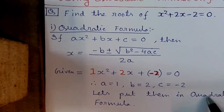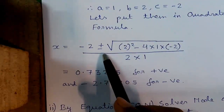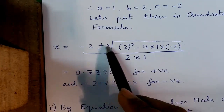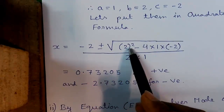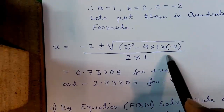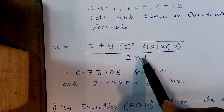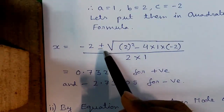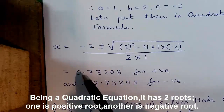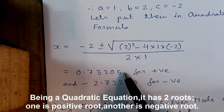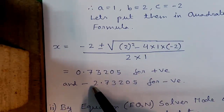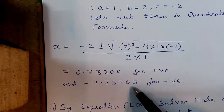Now let's put them into the quadratic formula. You will get X equals to minus B, that is minus 2, plus or minus root over B square, that is 2 square, minus 4 into A that is 1 into C that is minus 2, divided by 2 into A that is 2 into 1. If we put the plus sign, you will get the positive root that is 0.73205. And if we put the minus sign, you will get the negative root that is minus 2.73205.